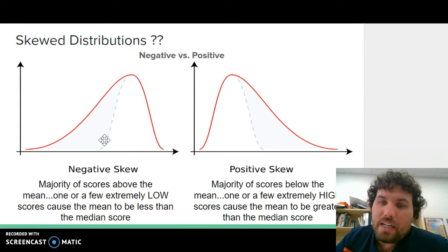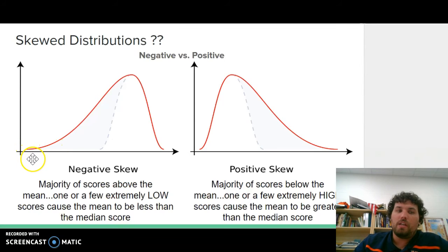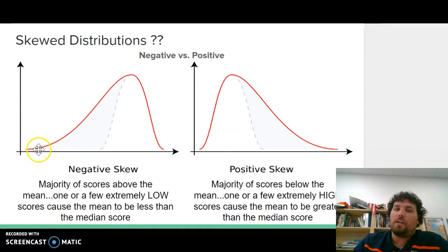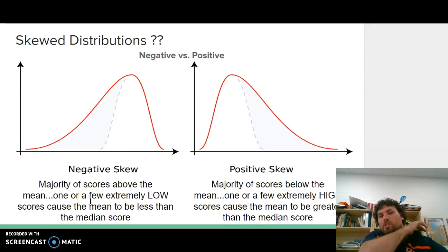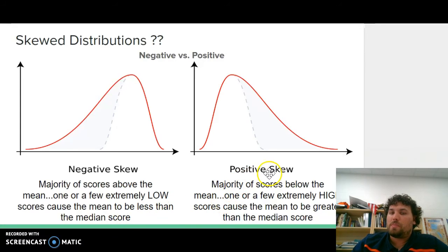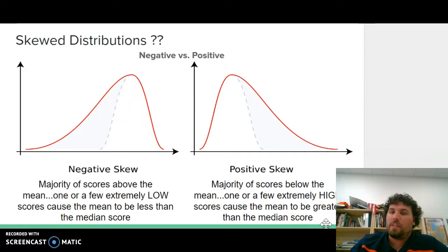You have a positive and negative skew. The skew is at the lower point of the graph — there are fewer people scoring in that area and more people scoring in the higher area. The negative skew: the majority of scores are above the mean, and one or a few extremely low scores cause the mean to be less than the median score. The positive skew: the majority of scores are below the mean and one or a few extremely high scores cause the mean to be greater than the actual median score.